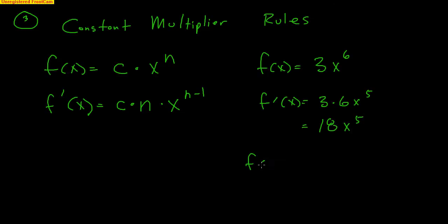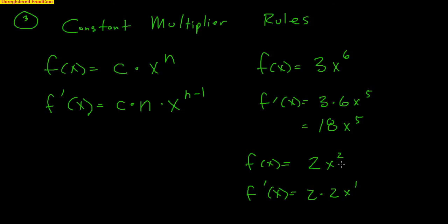Let's do another one. If the function is 2x squared, the derivative would be 2 times 2x to the first. The 2 comes down, 2 minus 1 gives a new exponent of 1, which means the derivative is 4x. Very simple constant multiplier rule.